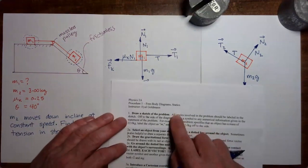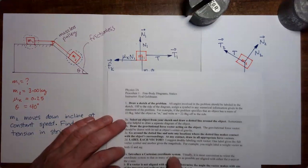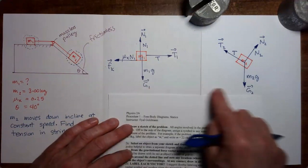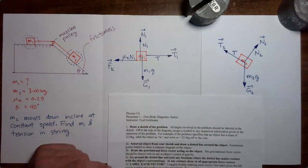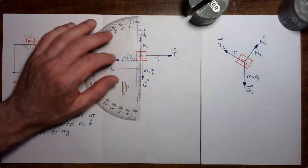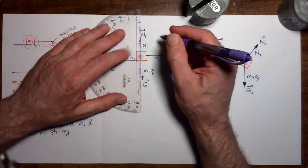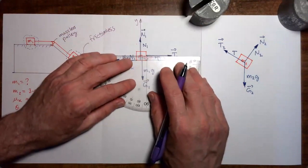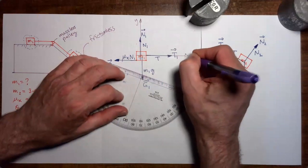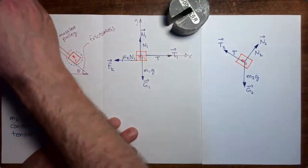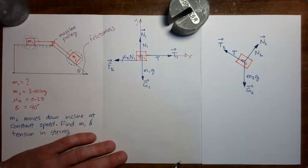Going back to the handout, we've just completed step 2. Now step 3 is to introduce Cartesian coordinate systems, done separately for each mass. For each mass, we pick the orientation of x and y axes so that as many vectors as possible line up with an axis. For mass 1, we choose standard orientation with the x-axis to the right and y-axis pointing up.